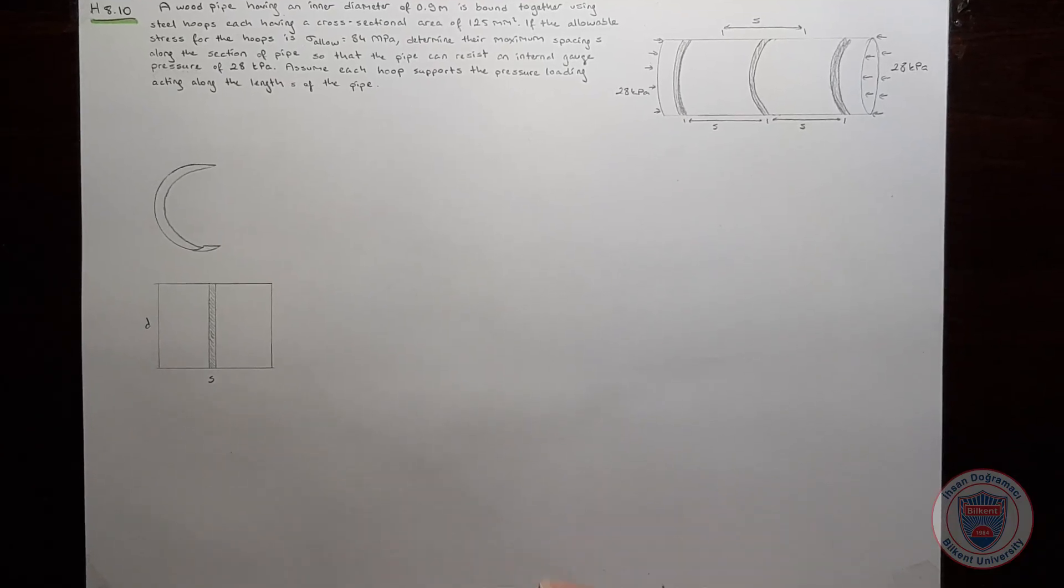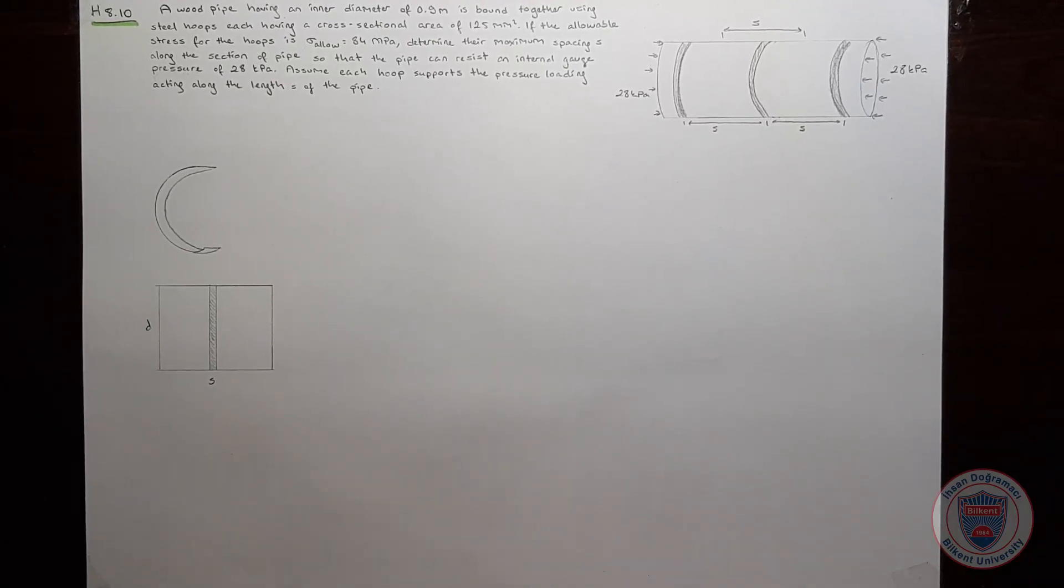In this question, we have a wood pipe which is bound together using steel hoops. The maximum allowable stress for the hoops is 84 MPa.